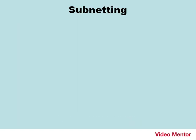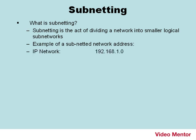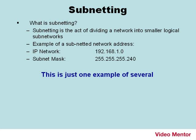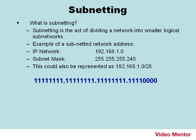Now let's talk subnetting. Subnetting is the act of dividing a network into smaller logical subnetworks. For example, the IP network 192.168.1.0, which normally would have a subnet mask of 255.255.255.0, but when we subnet, we're going to use 255.255.255.240. We're going to borrow bits from the host portion. This could also be represented as 192.168.1.0/28, because there are 28 ones in the subnet mask in binary.